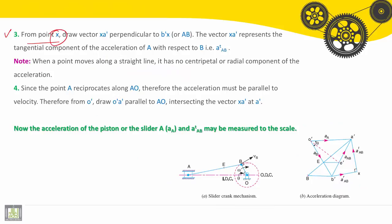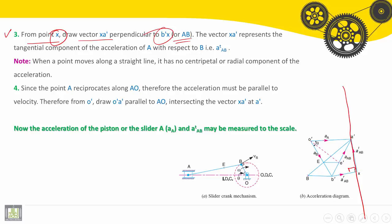From point X, draw the vector X A dash perpendicular to B dash X. It will be automatically perpendicular to AB. Here it is perpendicular to B dash X. The vector X A dash represents the tangential component of the acceleration of A with respect to B — the ATAB.